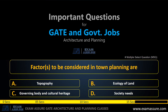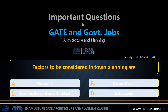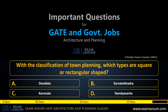Next question: factors to be considered in town planning are — A: topography, B: ecology of land, C: governing body and cultural heritage, D: society needs. This is a multiple select question and the correct answer is all of the above.